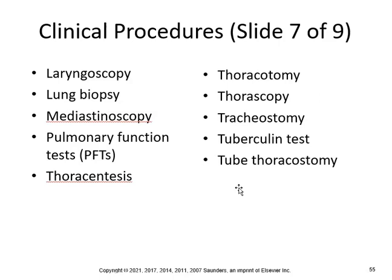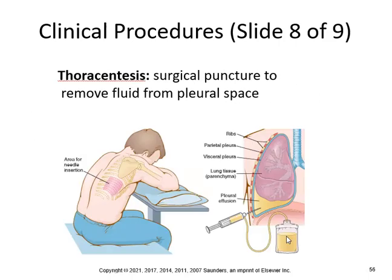You already know what ostomy, otomy, and oscopy mean, and what centesis means. You're just adding parts of the respiratory system and combining them with suffixes you already know — ostomy versus otomy versus ectomy. You don't have to learn all these words; you're learning parts of the word and combining them with anatomy. That is basically medical terminology 101.